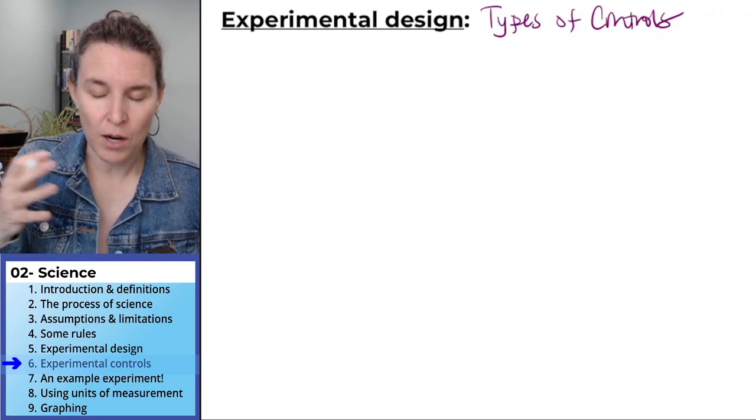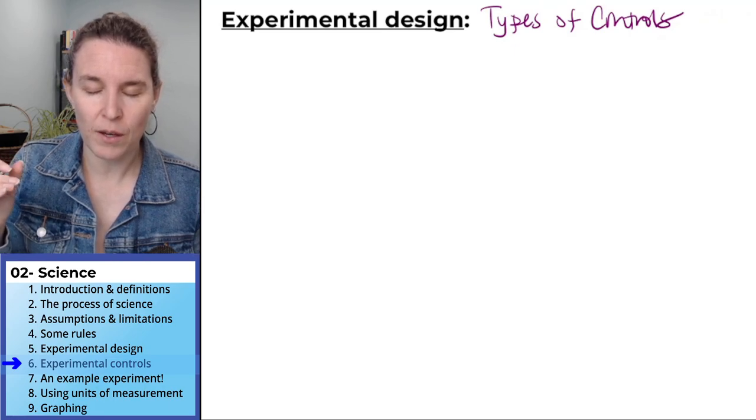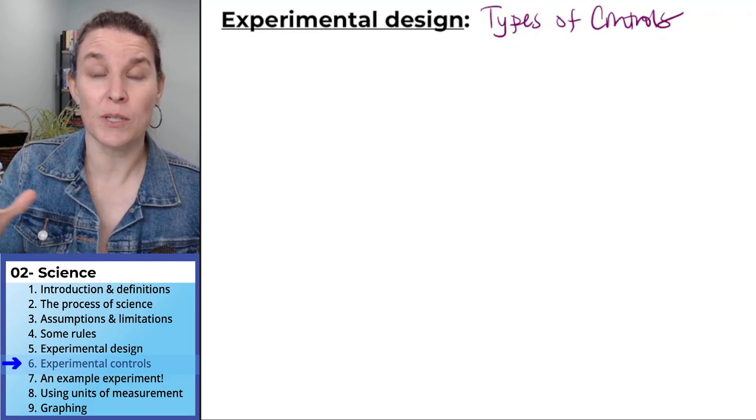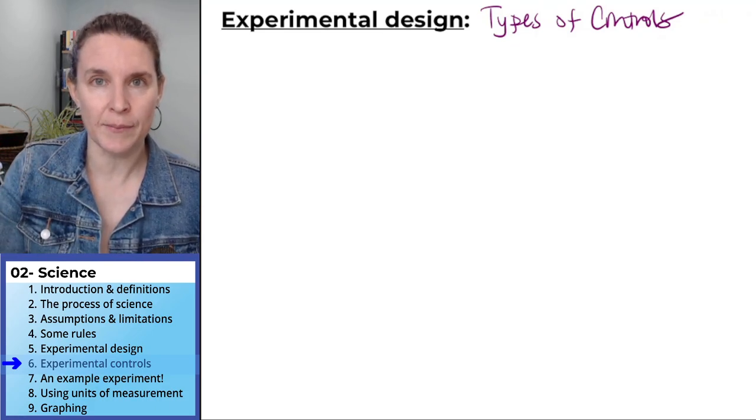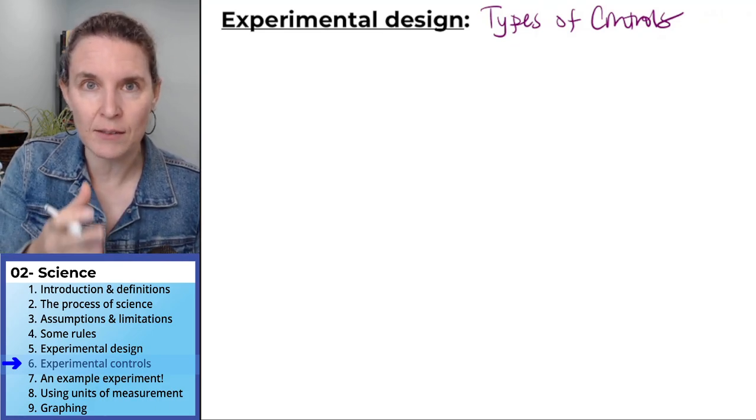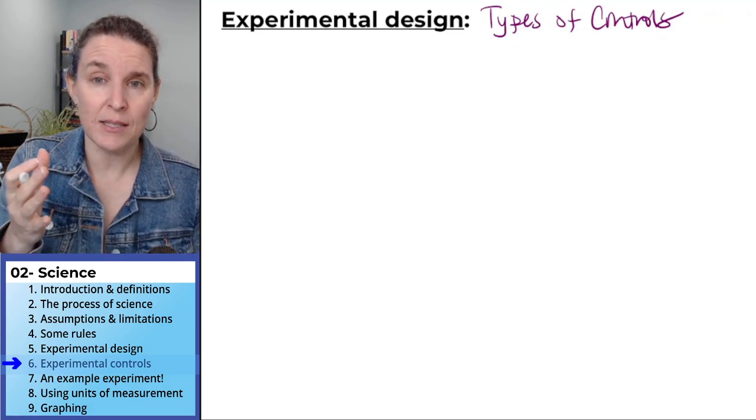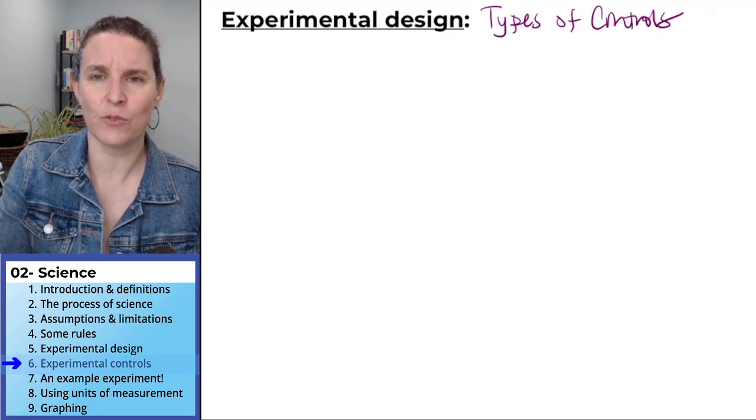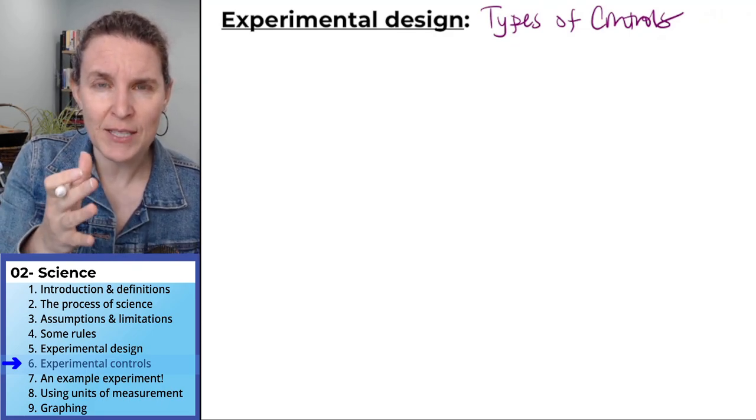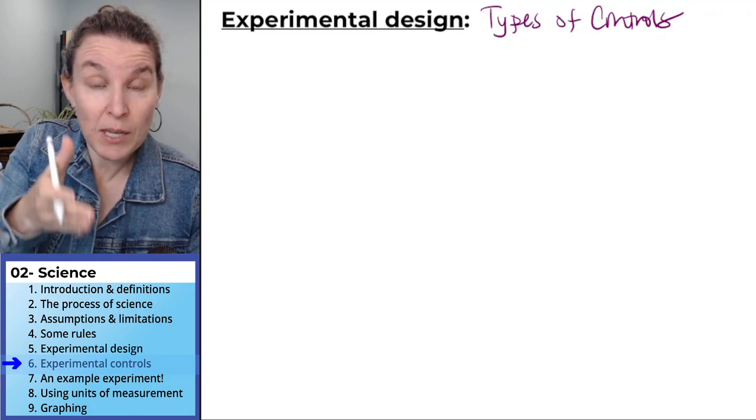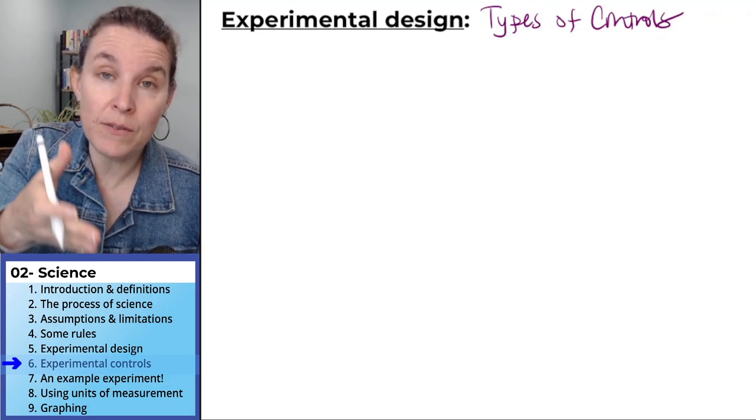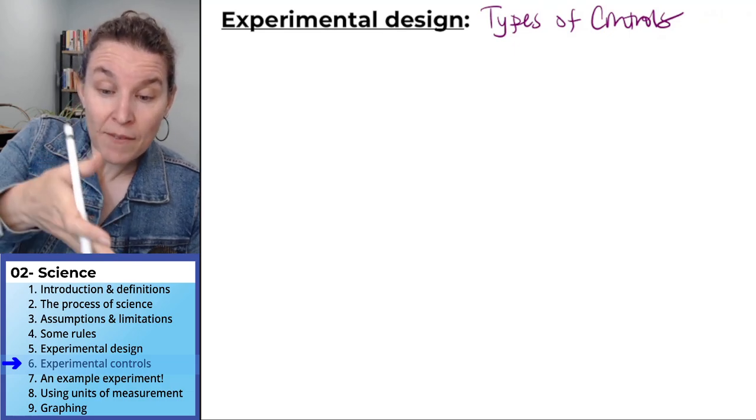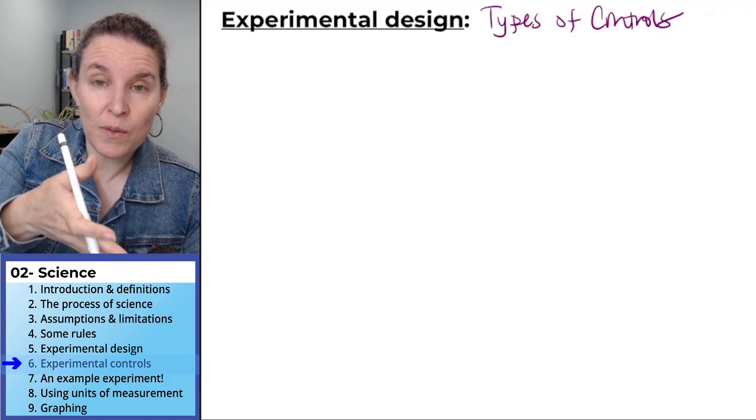If all you do in our example with brine shrimp, if all you do is change salinity and you don't have any predicted best outcome, I don't know where they live normally. If you don't have something where you're like, this is what I'm going to compare to, I know they live in this environment, how salty can they get? If you don't have that thing to compare to, then you don't know.